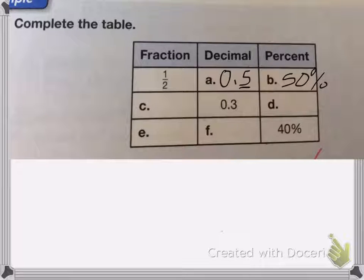On the next one, c, I have the decimal 0.3. So 0.3, I know that the 3 is in the tenths place. So that means it's going to be 3 tenths.